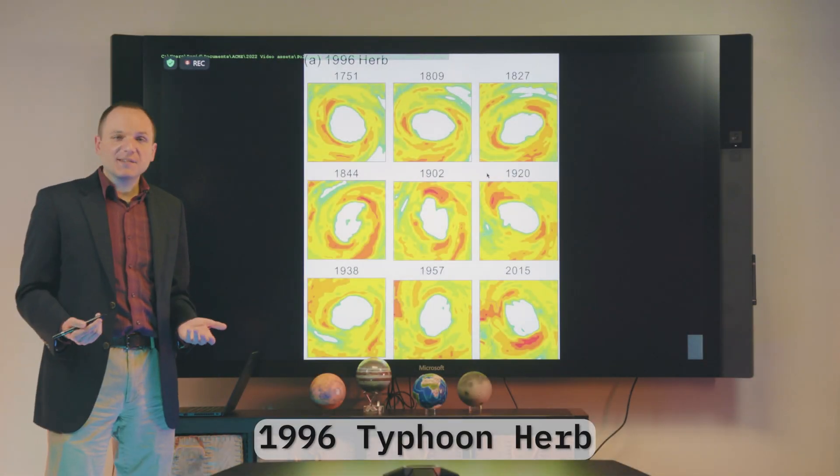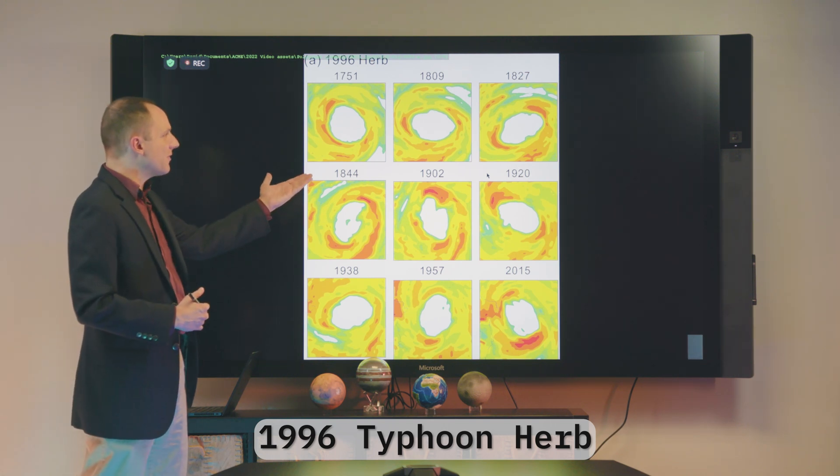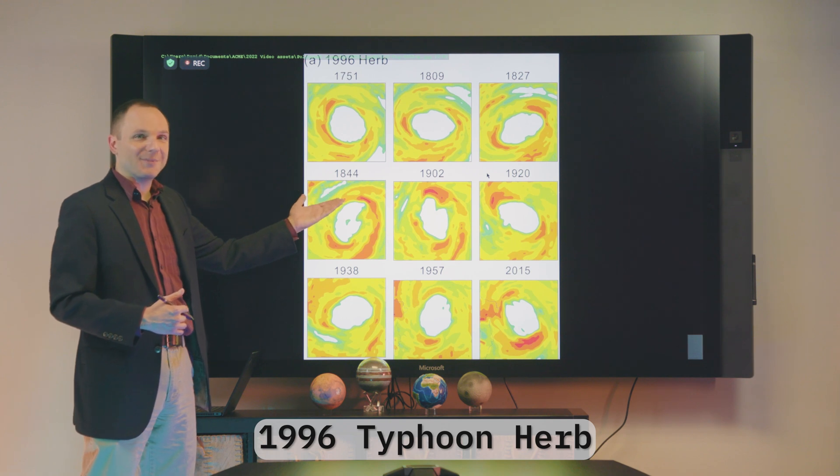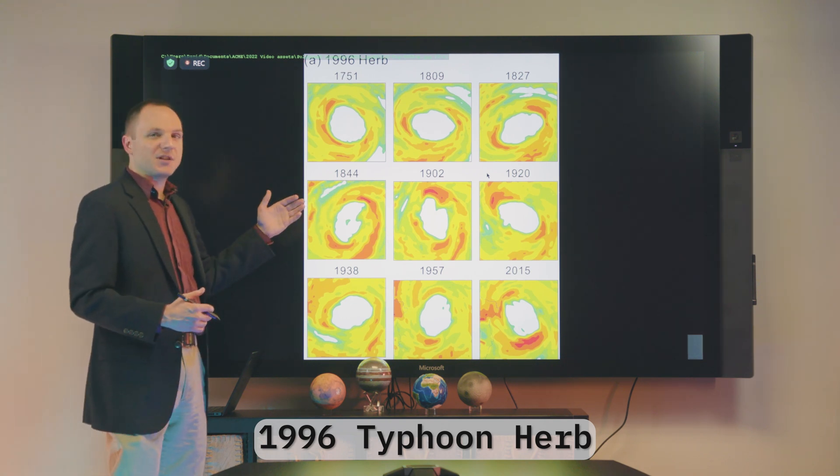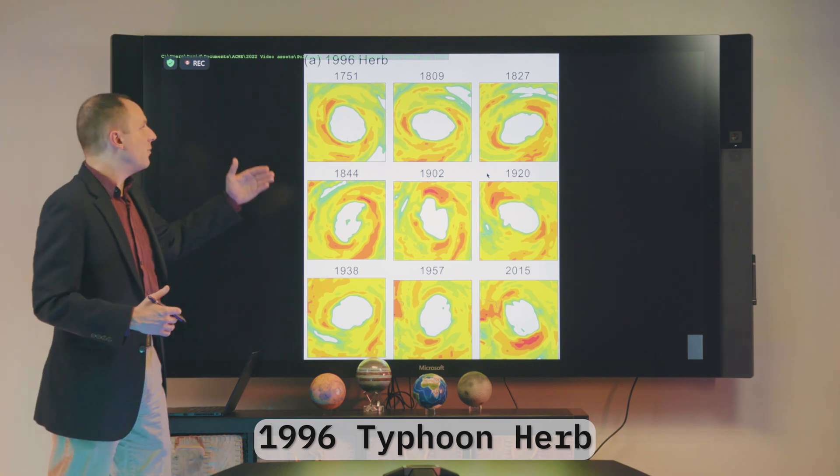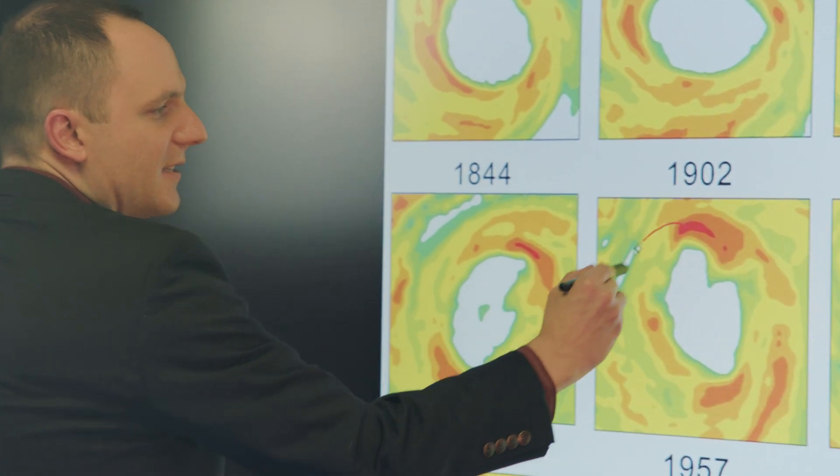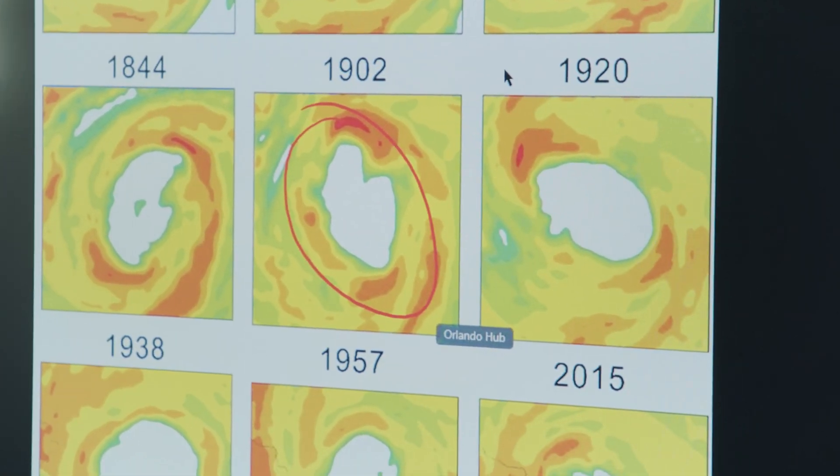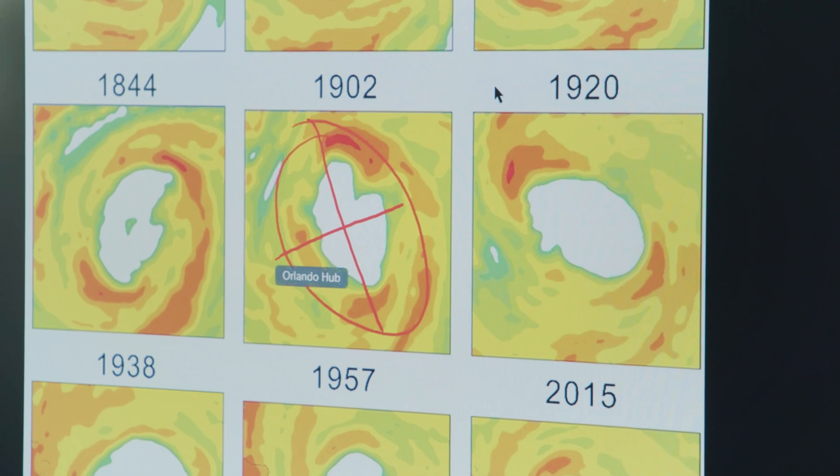And this is not basin specific. This can happen on any basin in the entire world. And this right here are radar observations from Typhoon Herb in 1996 in the Western Pacific. And for this particular shape, you know, it's not a square, it's not a triangle, but what we have is an ellipse. And if you look, especially here at 1902 UTC, you can see you have a major axis and a minor axis of this ellipse.